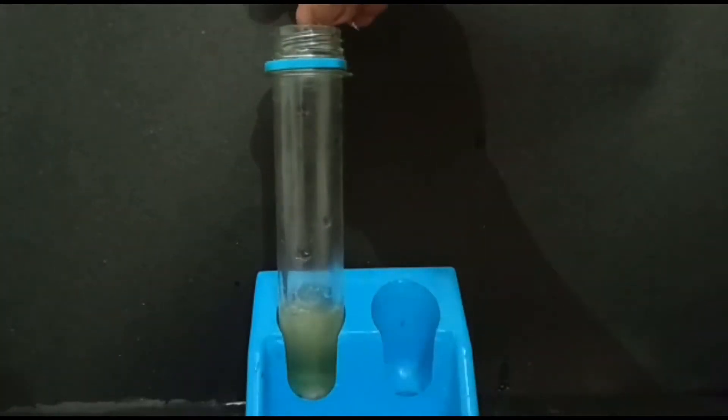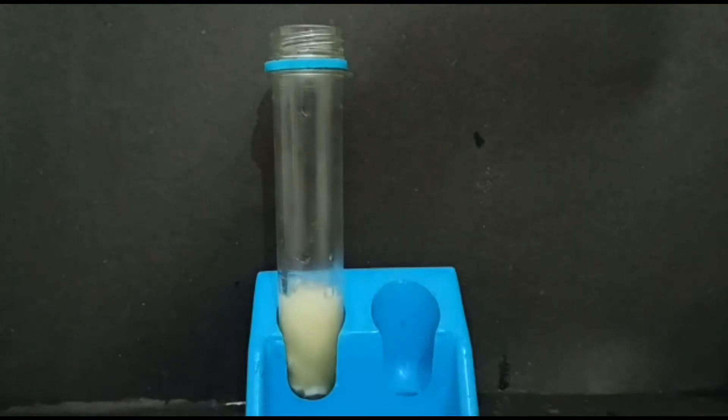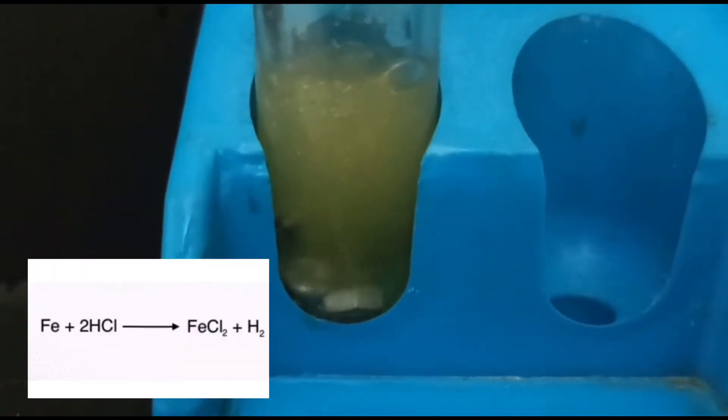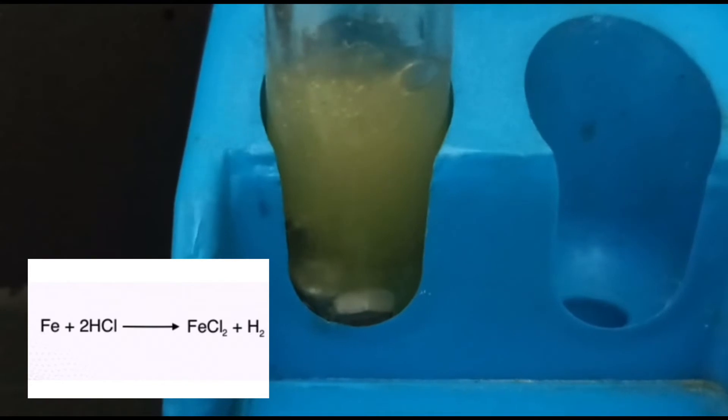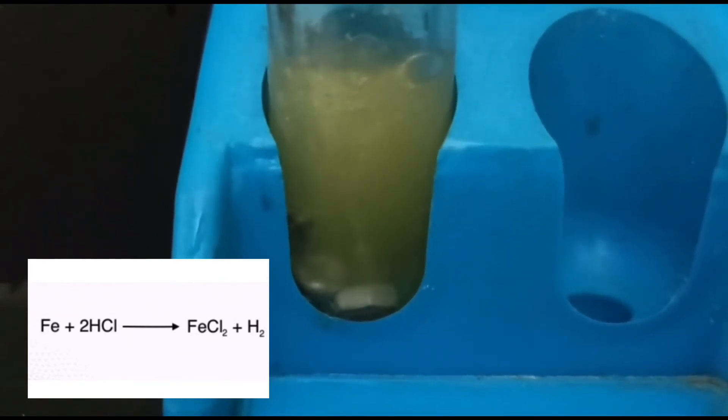As soon as the iron is added, the HCl reacts with the iron to make ferrous chloride and hydrogen gas, which you can see bubble out. The ferrous chloride solution is green in color.